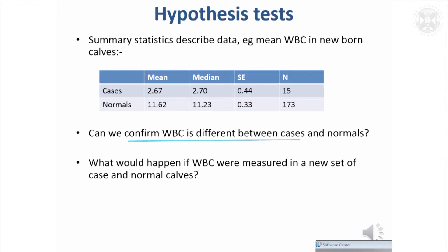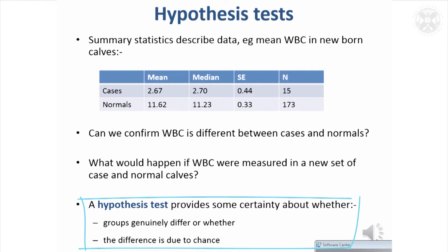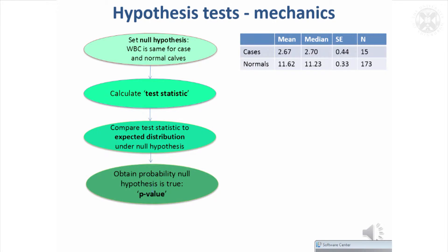You might think that's enough, but you can go on to actually prove that difference is statistically significant — that's when you use a hypothesis test. We want to confirm it and be sure that if we did the study again with a new set of calves, we would still get a difference. A statistical test will give us certainty about whether the cases and normals genuinely differ, or whether the difference is due to chance.